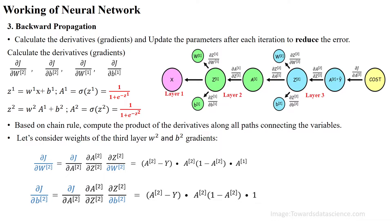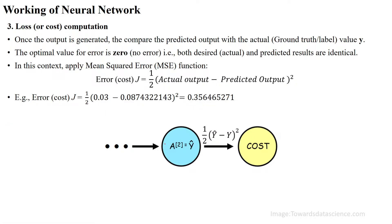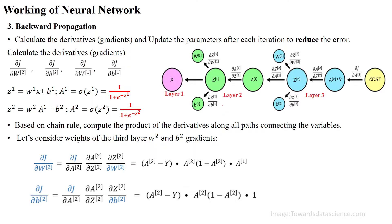Welcome to backpropagation of artificial neural networks. Once we have calculated the loss, we can go for backward propagation, which involves applying the chain rule to calculate the gradients. These gradients are used to update the parameter theta, or w values, to optimize our model by reducing the error.